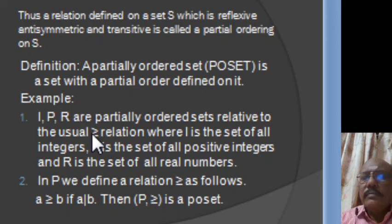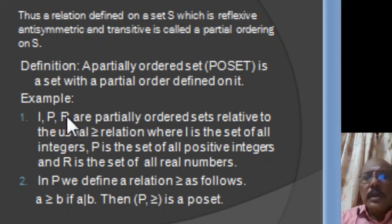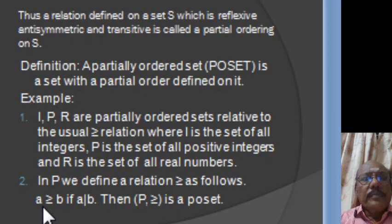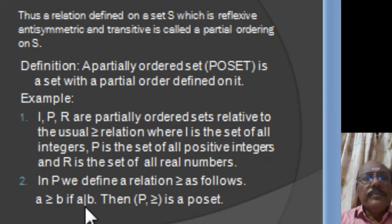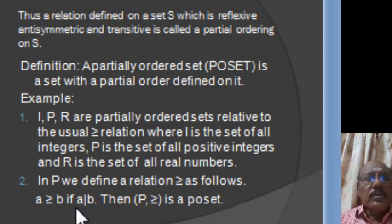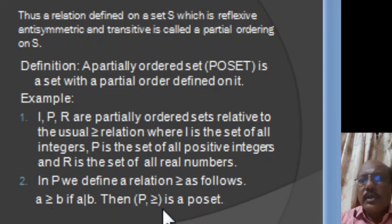In a similar way, the usual ≥ is a partial ordering relation on P, the set of all positive integers, and also on the set of all real numbers. Now in P, we define a relation: A ≥ B if A divides B. Certainly A divides A, therefore A ≥ A, satisfying reflexivity. If A divides B and B divides A, then A = B, so it satisfies anti-symmetry. If A divides B and B divides C, then certainly A divides C, so it satisfies transitivity. Therefore, the ordered pair (P, ≥) is a poset.